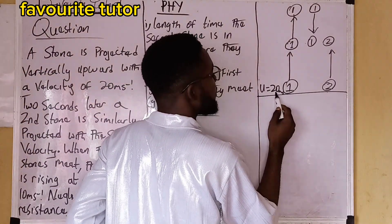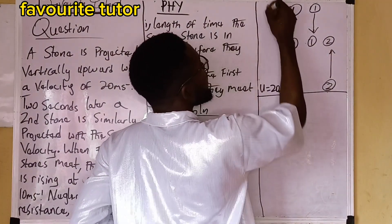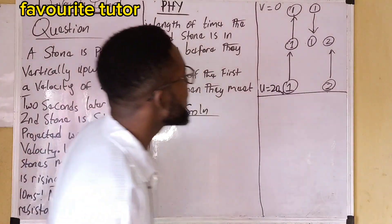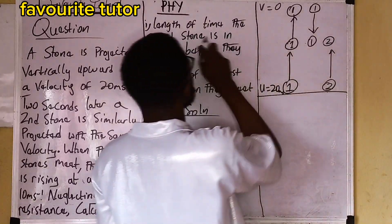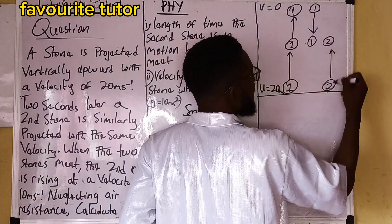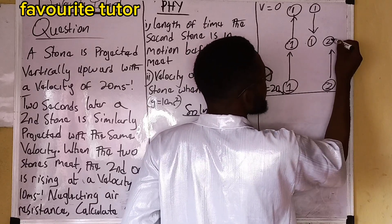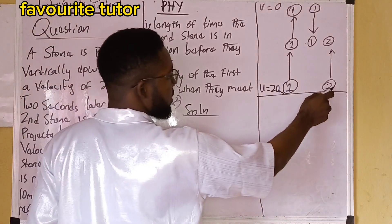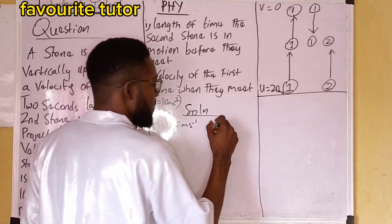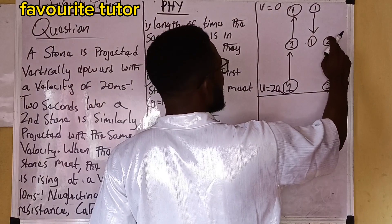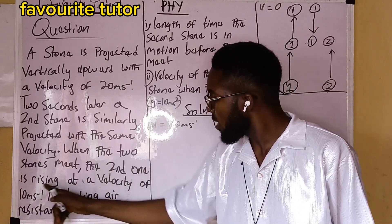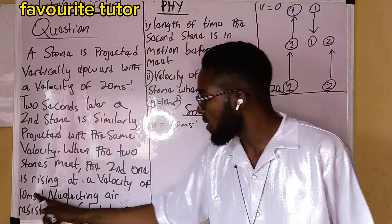The initial velocity for both stones is 20 meters per second. At maximum height, velocity is zero. Now for Part 1, we want the length of time the second stone is in motion before they meet. The parameters for the second stone: initial velocity u = 20 m/s, and the final velocity at the meeting point is 10 m/s — since the second stone is rising at 10 m/s when they meet.